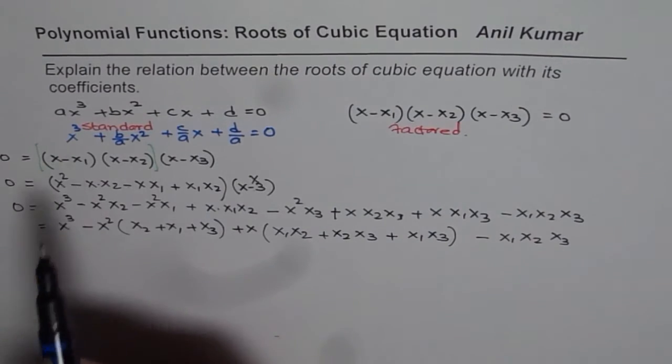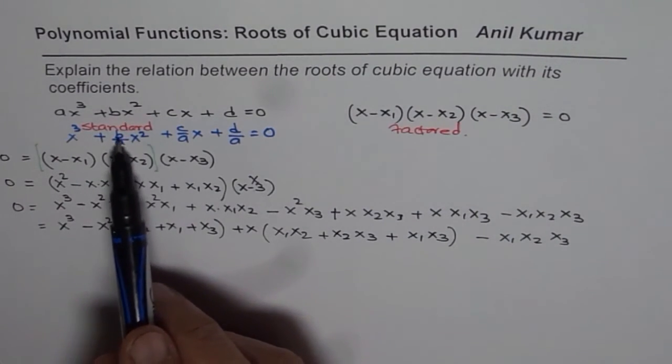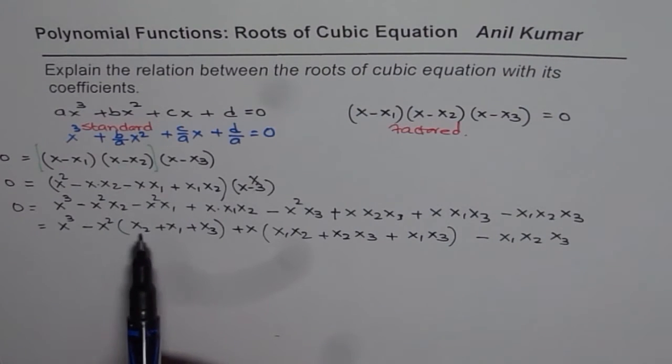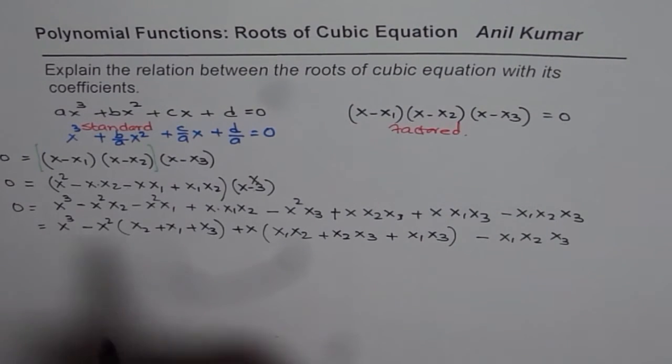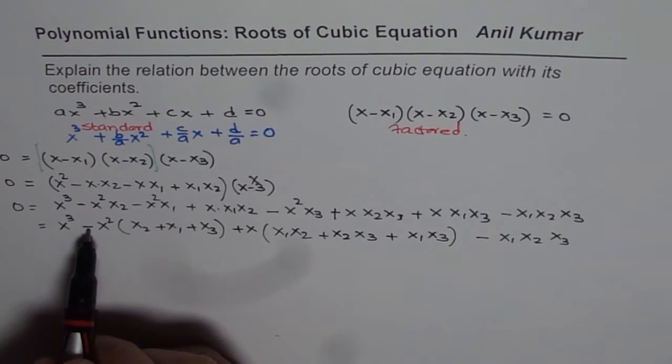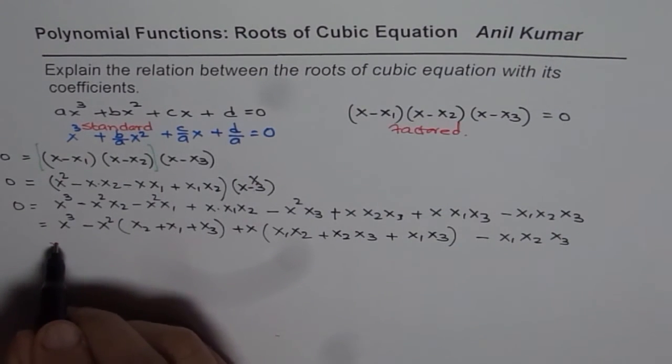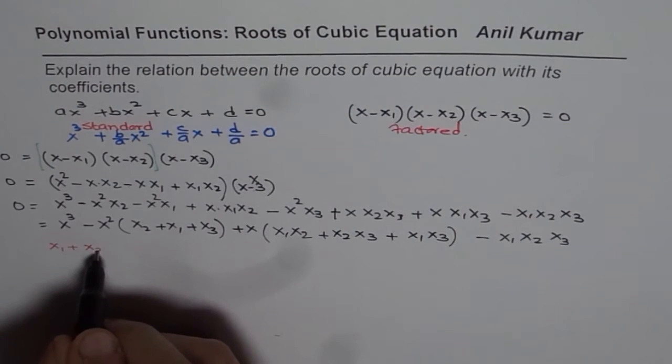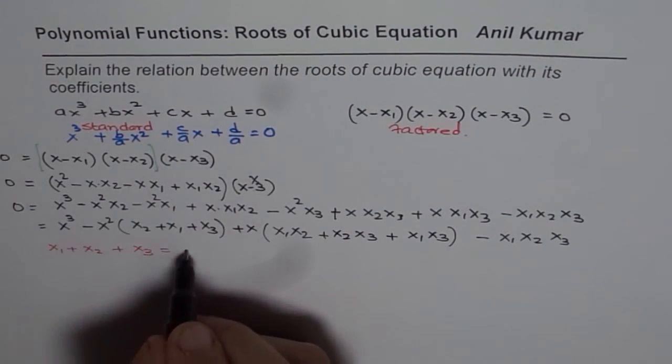So if you compare what we notice is that x² coefficient is b/A. Here the coefficient is sum of roots x₁, x₂ and x₃. So what you get here is b/A that is negative. So we could write sum of roots which is x₁ + x₂ + x₃ equals to -b/A.